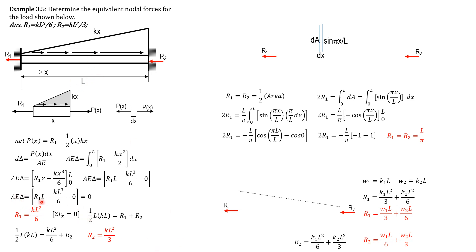That is why the expression for delta is equated to 0. Solving for r1, we get r1 = kl²/6. Summing forces horizontally, the total area of the load diagram is one-half of l times kl, which equals r1 plus r2. Substituting r1 = kl²/6, we solve for r2 = kl²/3. So remember: the equivalent nodal force at the left is kl²/6 or wl/6 (replacing kl by w), and at the right it is kl²/3 or wl/3.